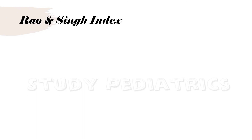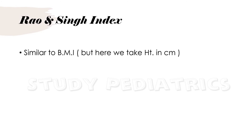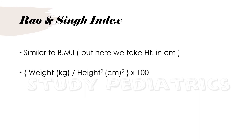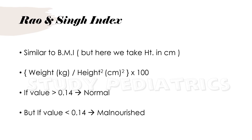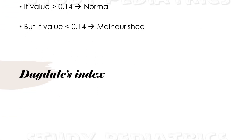Rao and Singh's index indicates measurement based on weight and height, similar to BMI. The formula is weight in kg divided by height squared in centimeters, multiplied by 100. Note that height is in centimeters here. If the value is more than 0.14, it indicates a normal child, but if the value is less than 0.14, it indicates malnourishment.